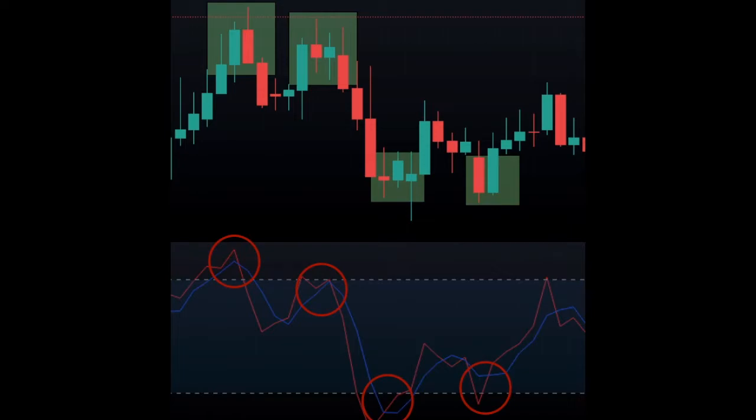The stochastic, when indicating the level 80 or level 20, is telling us that the trend right now is strong, and we need to be patient and have a slowdown of momentum before price can reverse.